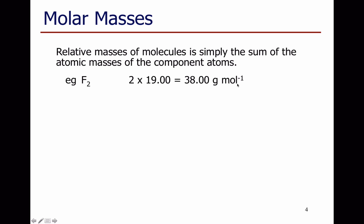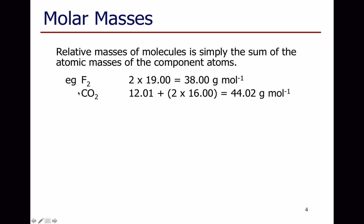For CO₂, look up carbon on the periodic table — I've got one carbon in the formula, 12.01, but I've got two oxygens. Oxygen has a mass of 16 on the periodic table, so 2 times 16, and I've got an overall mass of 44.02 grams per mole.